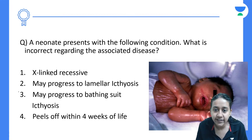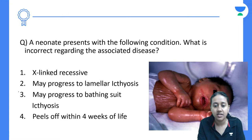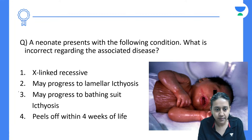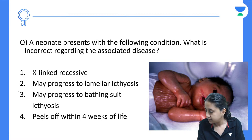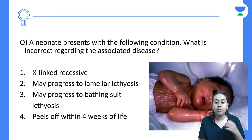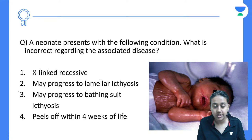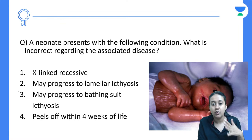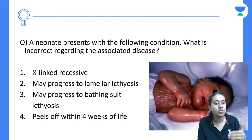Next question: a neonate with the following condition — what is the incorrect statement regarding the associated disease? Options include X-linked recessive, may progress to lamellar ichthyosis, may progress to peel off within 4 weeks of life. I request all students to do the topic of genodermatosis, cutaneous malignancies, and nutritional deficiencies in more detail, as many questions are asked from these topics.